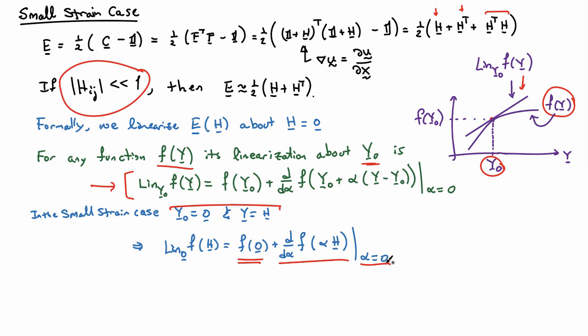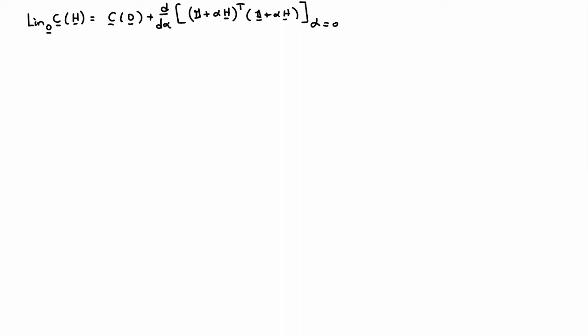As a first example, let's linearize the right Cauchy-Green deformation tensor C, which is given as a function of H. To formally linearize C about H equals zero, we evaluate C at zero and then take the derivative of the expression for C with H replaced by alpha H, then set alpha equal to zero. Going through that exercise: C evaluated at zero is the identity, and out of the derivative term we get H plus H-transpose. So the linearized C is identity plus H plus H-transpose—linear in H, as expected.